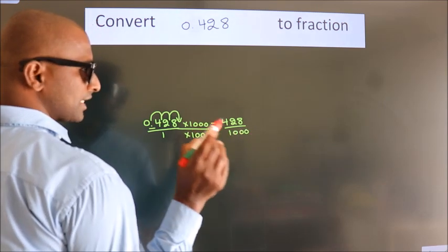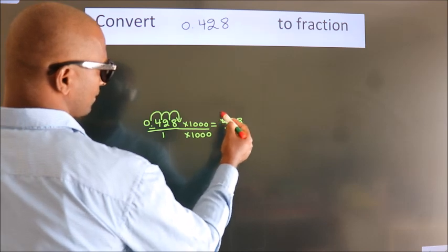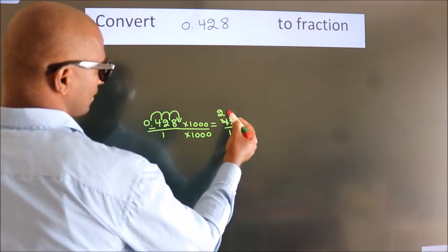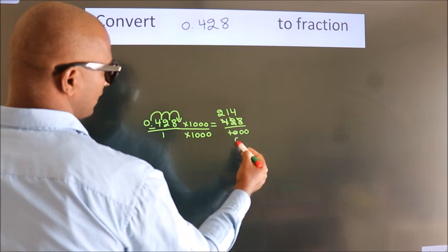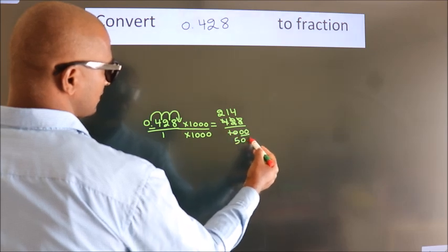Now I cancel with 2. 2 twos, 2 ones, 2 fours, 2 fives, these zeros as it is down.